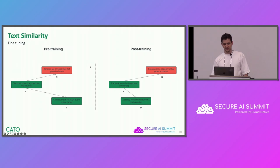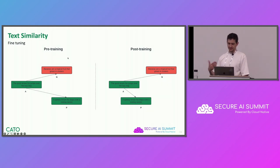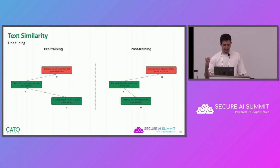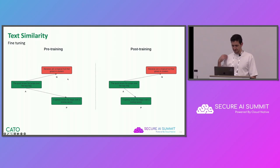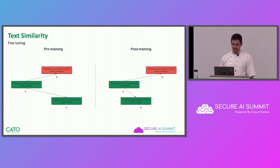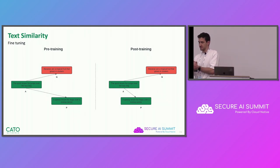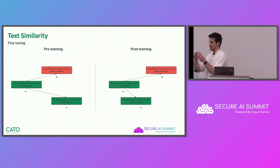Let's see this example. We have the following triplet: A, P, and N — A stands for anchor, P stands for positive, and N stands for negative. A and P have the same meaning: 'The quick brown fox jumps over the lazy dog' and 'A speedy brown fox leaps over a resting canine' — essentially the same sentence with different wording. But the negative example has a completely different meaning. If we take a foundation model before fine-tuning, we might get similar distances between A and P and A and N. But after training, we expect A and P to be much closer together in comparison to A and N.